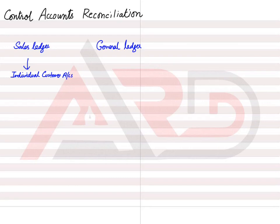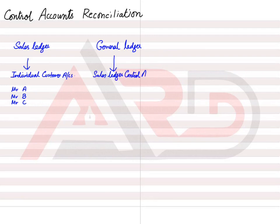Right now I'm talking about the sales ledger and general ledger. In my example, in the sales ledger we have three customers: Mr. A, Mr. B, and Mr. C. There can be many customers to whom you sell goods on credit. These three customers' individual accounts need to be made in the sales ledger, and in the general ledger we make a combined account of all three customers, known as the sales ledger control account — also abbreviated as SLCA. Individual accounts are made in the sales ledger, and the combined account for all customers is kept in the general ledger.